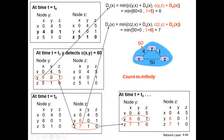This problem is the count-to-infinity problem. If Y is on the path to X at risk, then Z is also on the path at risk. So ZY to X: in the case of Z using the poison reverse technique, DZ,X is set equal to infinite. This is called poison reverse.